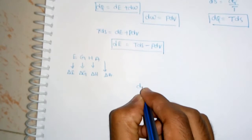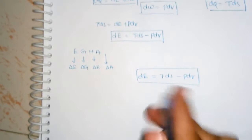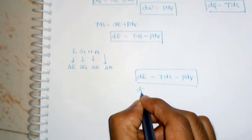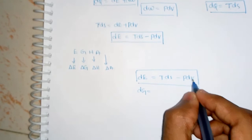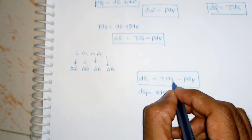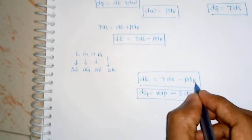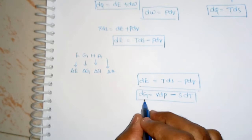We already know that DE = TDS − PDV — this is very important, so remember this. The exact reverse of this equation gives the change in Gibbs free energy: DG = VDP − SDT. The signs are reversed and the variable pairs are swapped to obtain this relation.